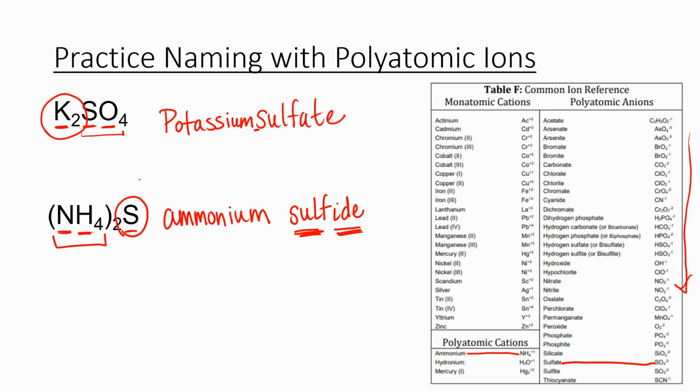So when your anion is just an element, you use its name from the front of the table, like sulfur, as its prefix, and then you change the ending to I.D.E. So ammonium sulfide.